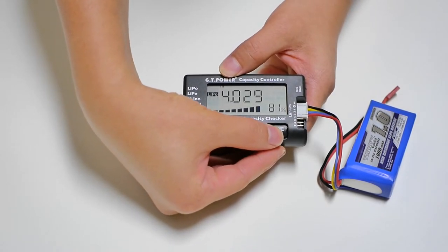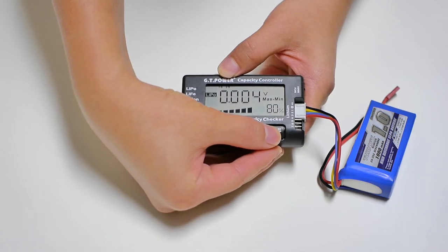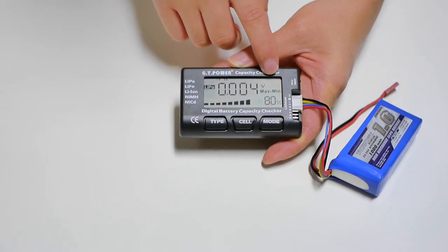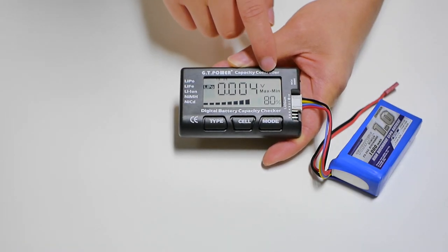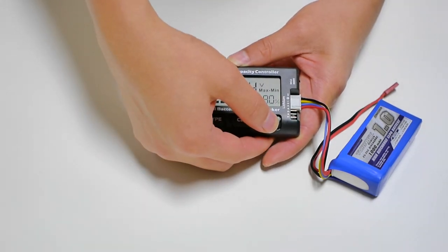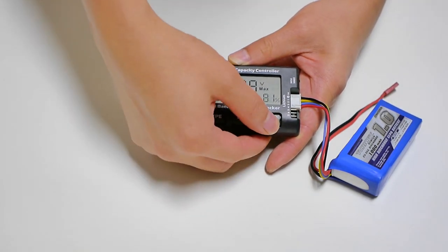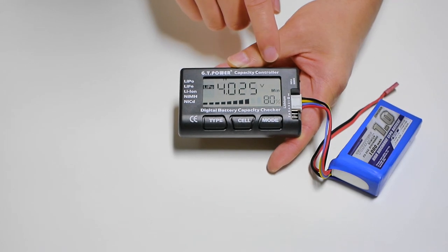You can check the total voltage of the pack, the maximum difference voltage between each cell, the maximum voltage of the cell in the pack, and the minimum voltage of the cell in the pack.